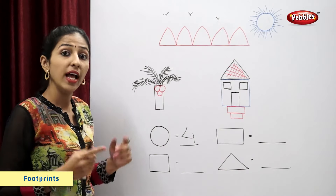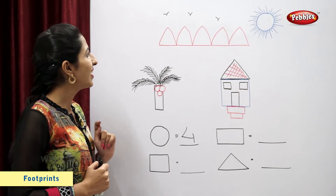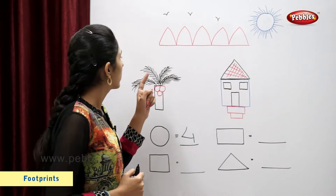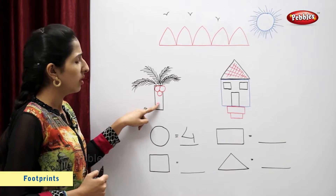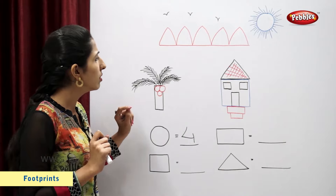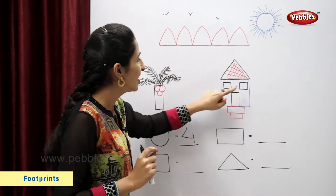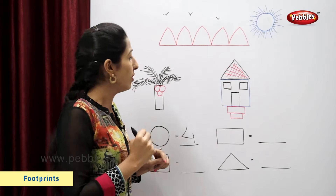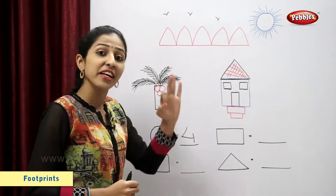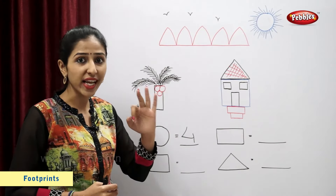Now let's count squares. Is this a square? No. One, two, three. So there are total three squares.